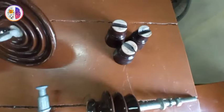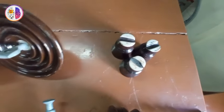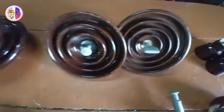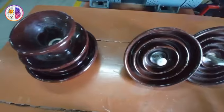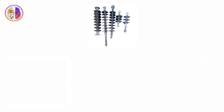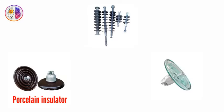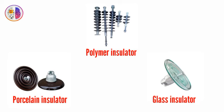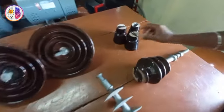First of all, you can use these insulators for mechanical strength. There are three basic types of insulators: Porcelain Insulator, Polymer Insulator, and Glass Insulator. We use these insulators as major components when we manufacture all power lines. These 3 insulators — Porcelain, Glass, and Polymer — are what we will see in this video.